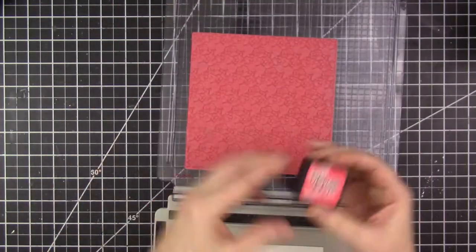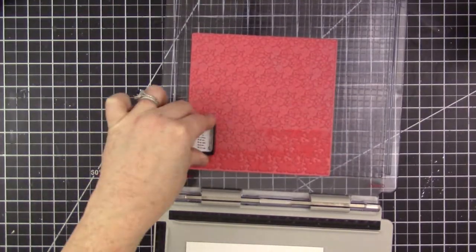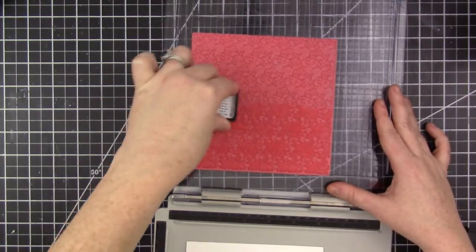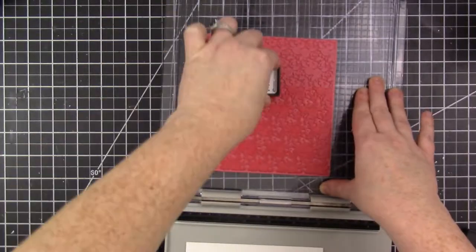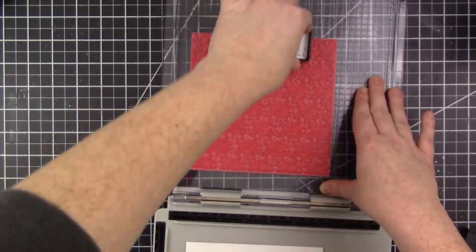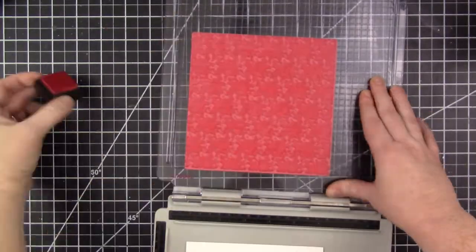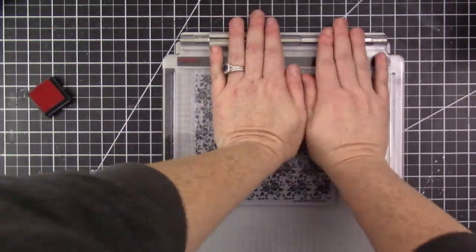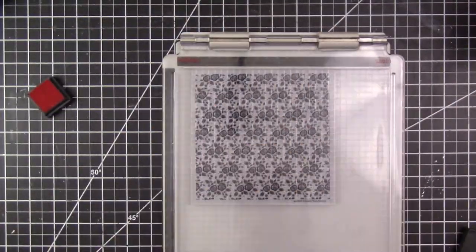I'm stamping with the color Abandoned Coral Distress Ink, and I double stamp it so that I get a nice impression. I end up cutting this piece in half lengthwise, so I actually end up with two pieces to make two cards.